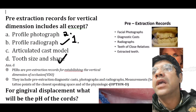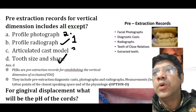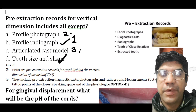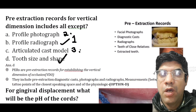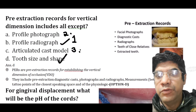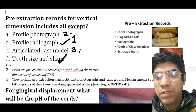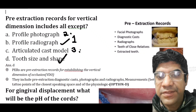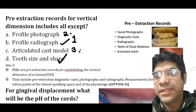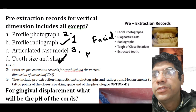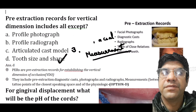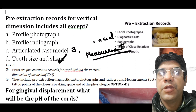The third pre-extraction record is the articulated cast and model. For dentulous patients, casts are mounted on the articulator using a facebow record. Occlusal records with the jaws in centric relation are used to mount the mandibular cast. After tooth extraction, edentulous casts are mounted and inter-arch comparisons are made. Facial measurement — the distance between the nose and undersurface of the chin — is measured using calipers.